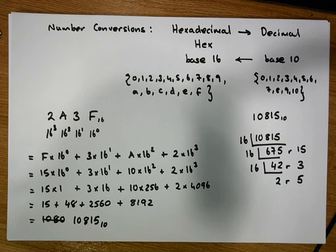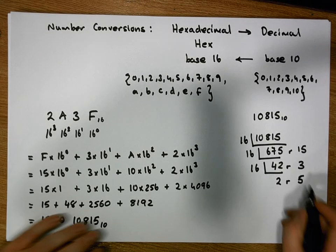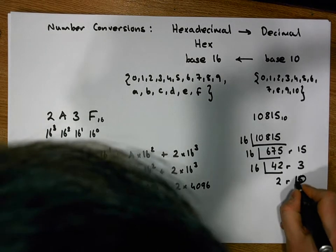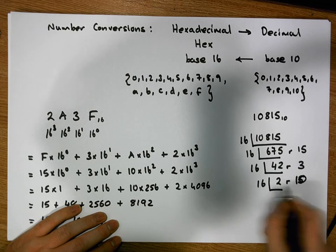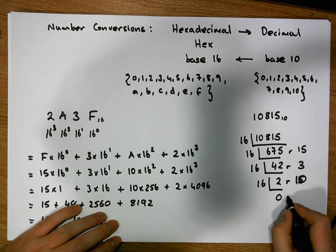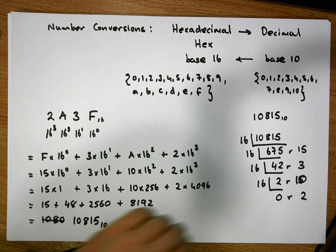And finally 16 into 2 goes 0 times with a remainder of 2. So let's keep in mind that this is the most significant digit and this is the least significant digit.